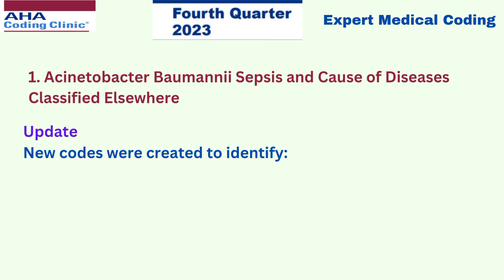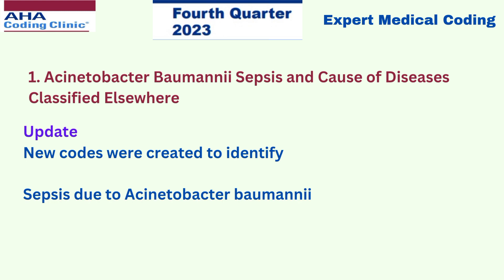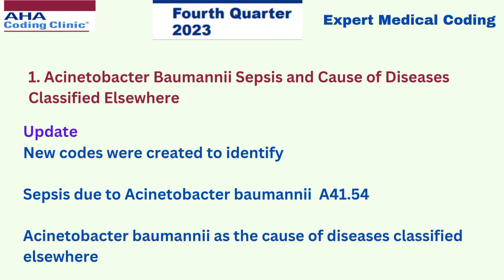The update here is that new codes were created to identify sepsis due to Acinetobacter baumannii — the code is A41.54 — and Acinetobacter baumannii as the cause of disease classified elsewhere — the code is B96.83.